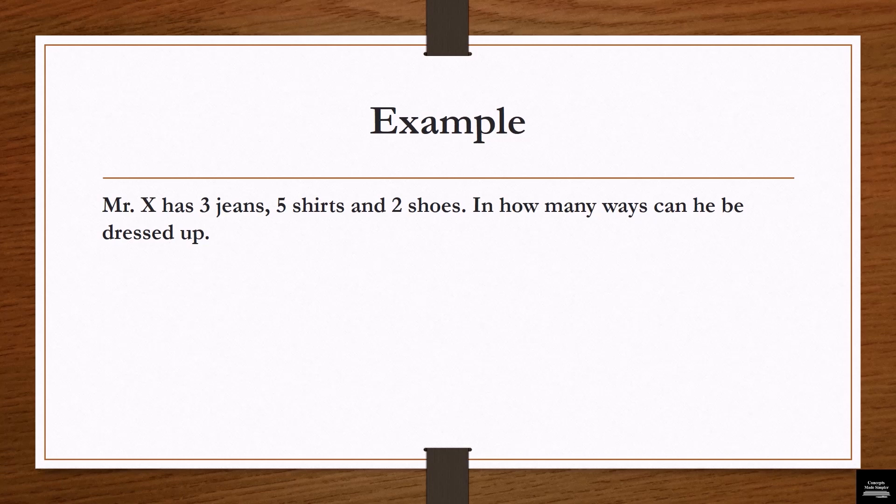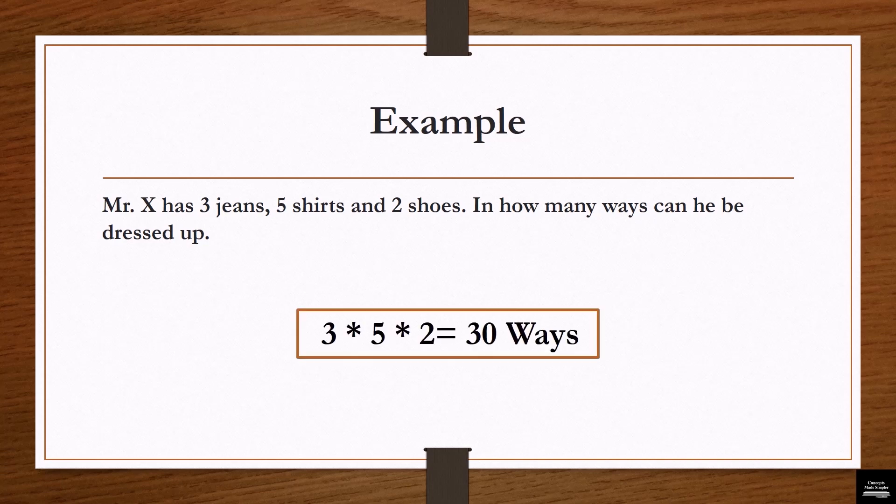I will wait for two seconds — you can pause the video and solve it. The answer is 3 × 5 × 2, which is 30 ways.